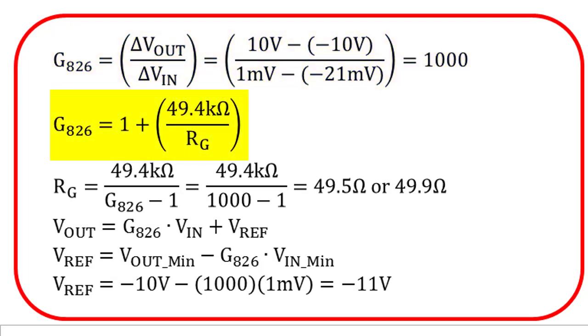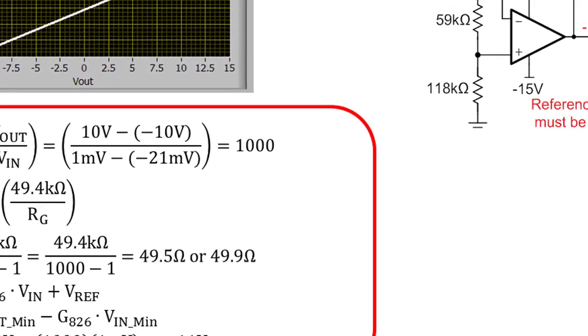We rearrange the Vout equation to solve for Vref and apply Vin equals negative 1 millivolts, Vout equals negative 10 volts, and gain equals 1000. The final result is that the reference voltage of negative 11 volts is required to shift the output to plus or minus 10 volts.